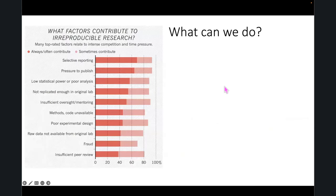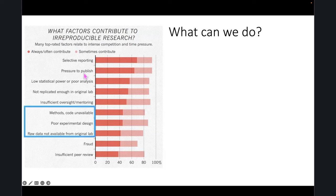In terms of factors contributing to irreproducible research, one of the main ones is pressure to publish, which is tied to selective reporting. If you get a sample that's kind of messed up but you just have to use it because you need to get that publication out, that's one of the things that can cause someone else not to be able to reproduce your research. More pertinent to this talk are the methods for experimental design and broad data not being available.